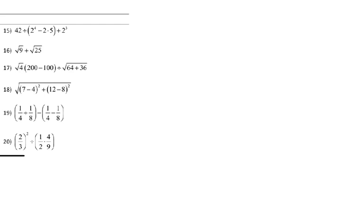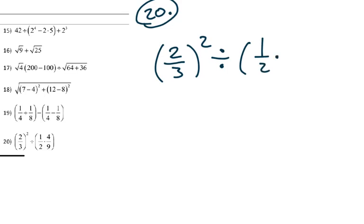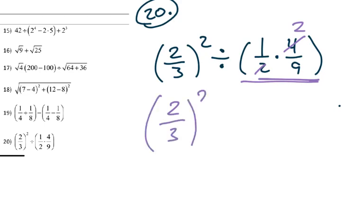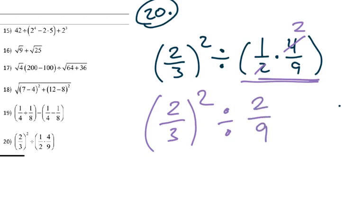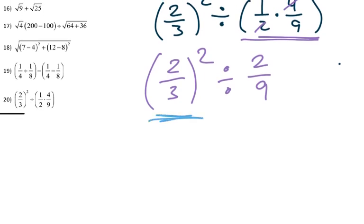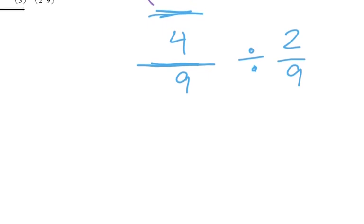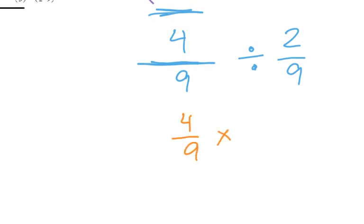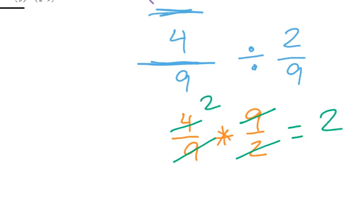Number twenty is 2-thirds squared divided by the quantity one-half times 4-ninths. PEMDAS: parentheses first — one-half times 4-ninths simplifies since 2 goes into 4 twice, giving 2-ninths. Next, exponents: 2-thirds squared means squaring numerator and denominator, giving 4 over 9. Now divide 4-ninths by 2-ninths: multiply by the reciprocal, 4-ninths times 9-halves. The 9s cancel and 2 goes into 4 twice, so the answer is 2.